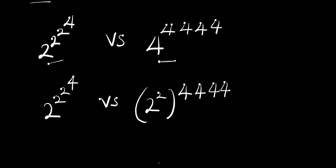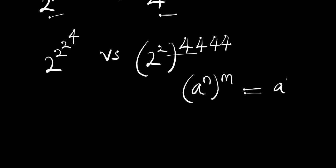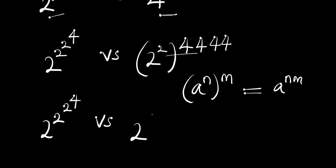The next thing we are going to do is multiply these two exponents using this identity: if we have a power n raised to power m, this equals a power n times m. So applying this to the right side, if we multiply, we are going to have the exponent become eight eight eight and eight.